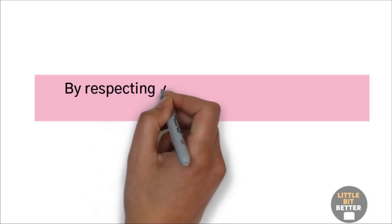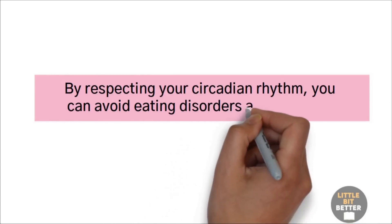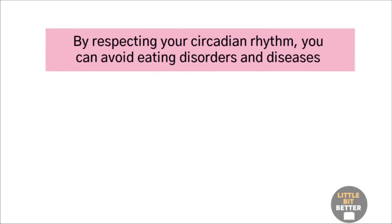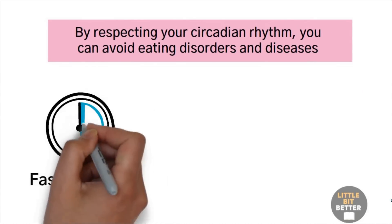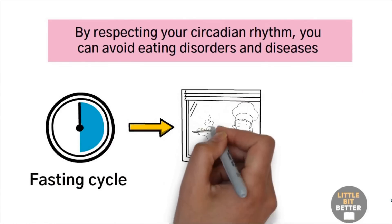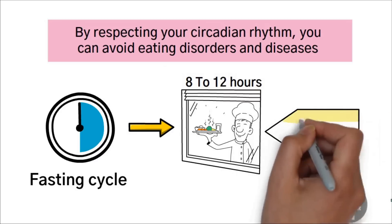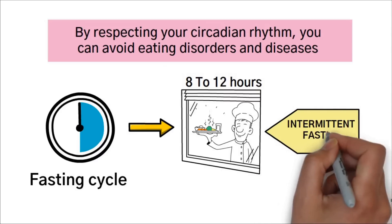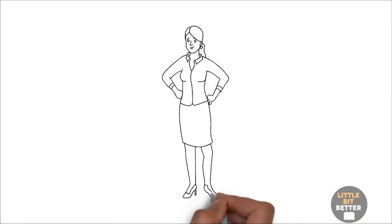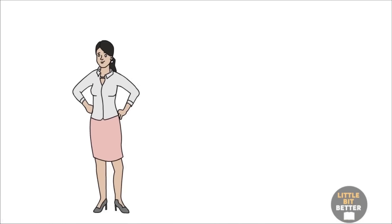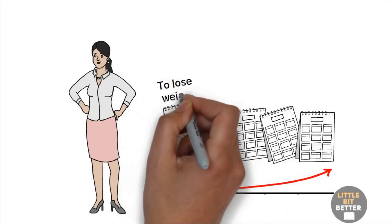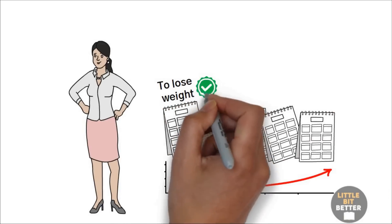By respecting your circadian rhythm, you can avoid eating disorders and diseases. The author supports a fasting cycle that can last from 12 to 16 hours, with an eating window of 8 to 12 hours. This type of eating is also known as intermittent fasting. You've probably heard of it. I personally have been doing intermittent fasting for more than 5 years. I started it as a way to lose weight, and it worked quite well for my weight loss.